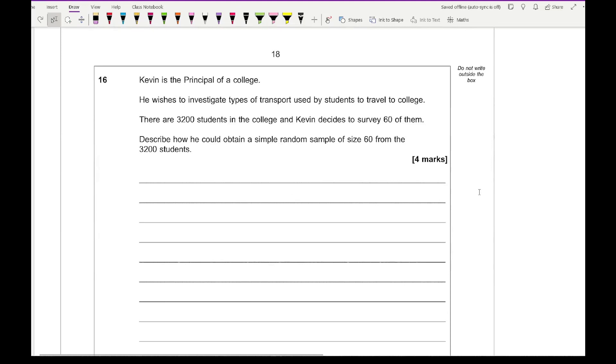Moving on to question 16, Kevin is a principal of a college. He wishes to investigate types of transport used by students to travel to college. There are 3,200 students in the college and Kevin decides to survey 60 of them. Describe how he could obtain a simple random sample of size 60 from the 3,200 students. First, we need to give each student a number from 1 to 3,200. Make sure the range has got to be 3,200. If we go from zero, there would be 3,201, so be mindful of what numbers you are writing.